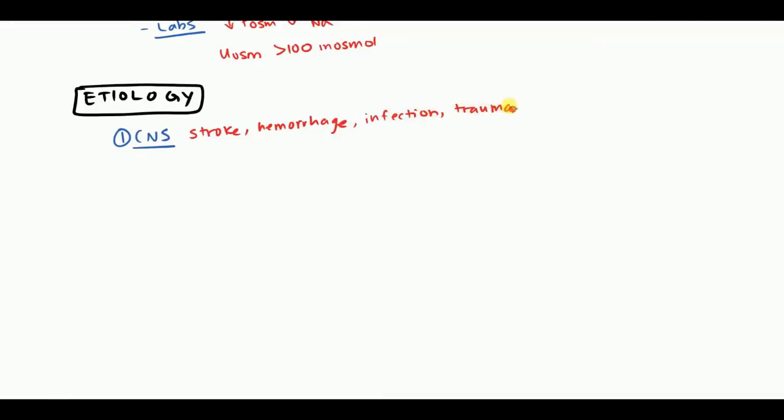One thing you do want to keep in mind is in hemorrhage, subarachnoid hemorrhage can also lead to something else known as cerebral salt wasting. This is important to differentiate because there are different pathologies underlying it, but they look the same. In cerebral salt wasting, the ADH will also be high, so you'll think that you have SIADH.